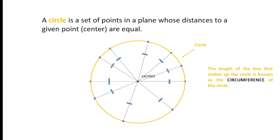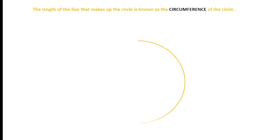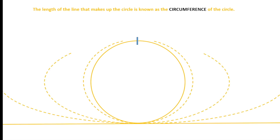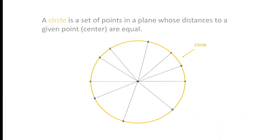The length of the line that makes up the circle is known as the circumference of the circle. Imagine a rubber band — if you cut it, the figure will unfold and fall to the ground as a straight line. The length of that straight line is actually known as the circumference of the circle.